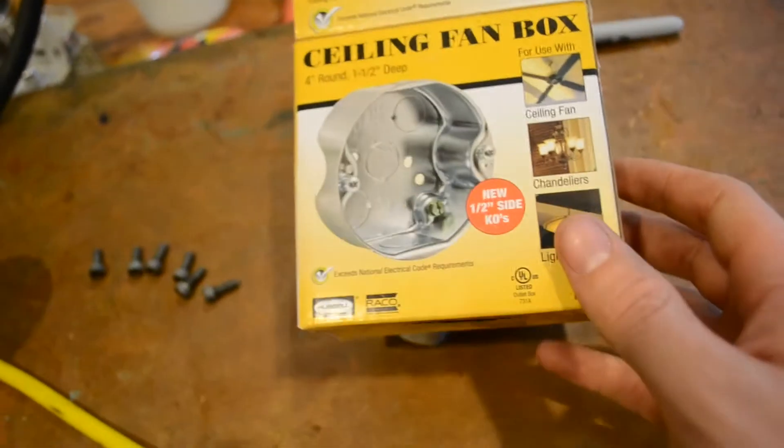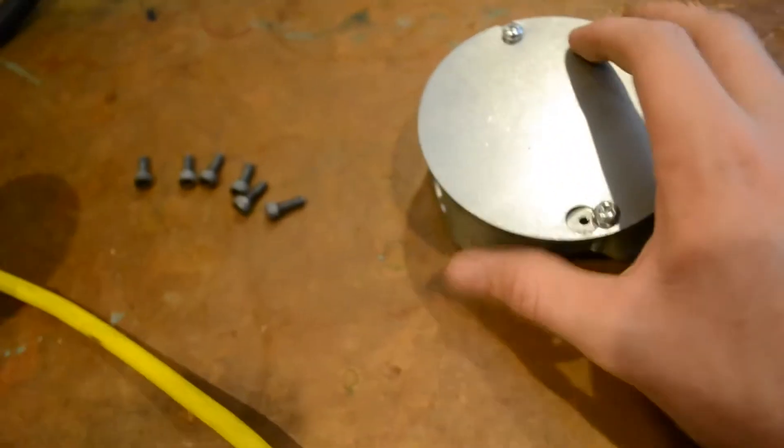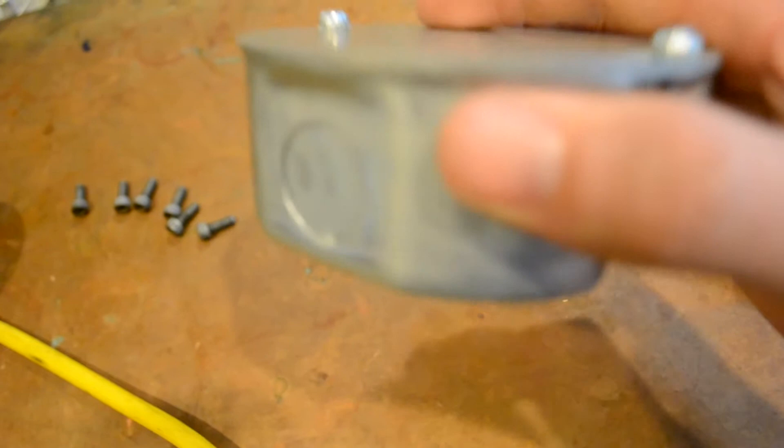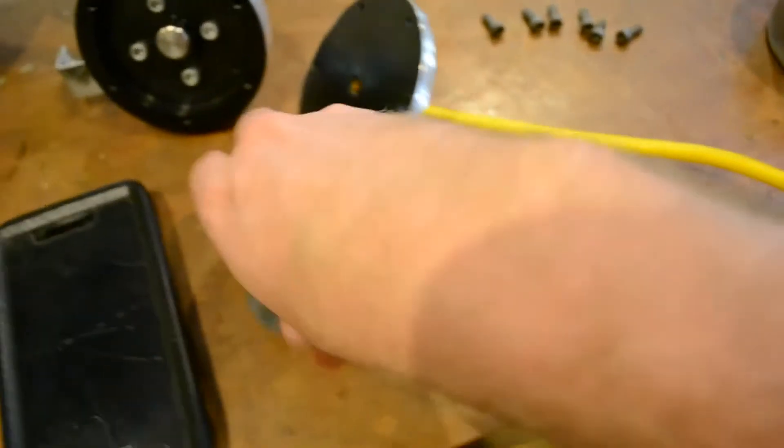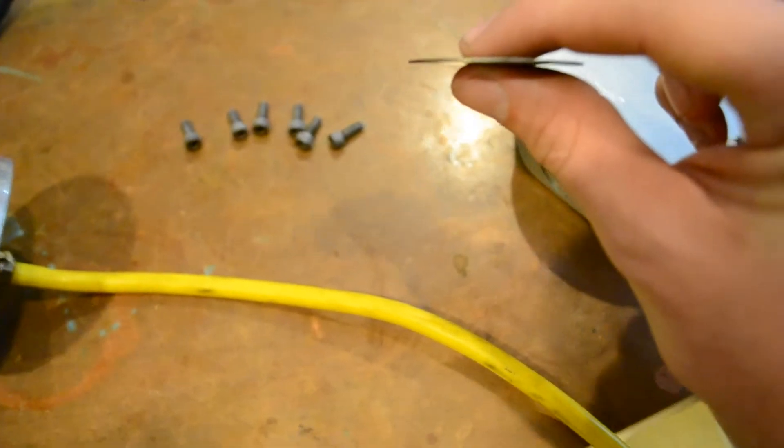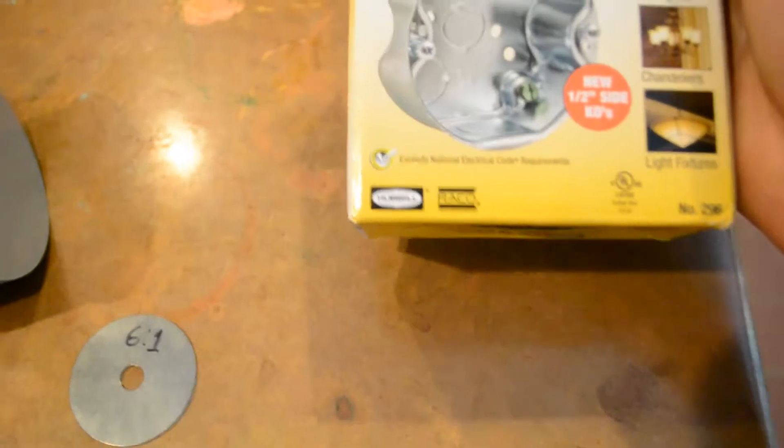So what I did end up finding was this ceiling fan box. It was like four or five dollars, and it has this lid that is extremely thin. I measured them, and it's pretty close to that thickness. I bought this ceiling fan box made by Hubble, part number 296. So that's what I'm using for the lid.